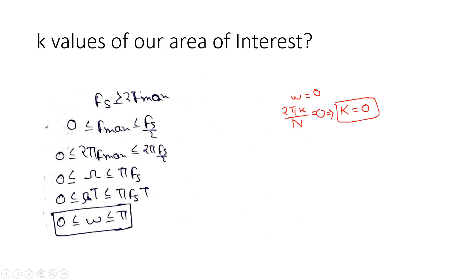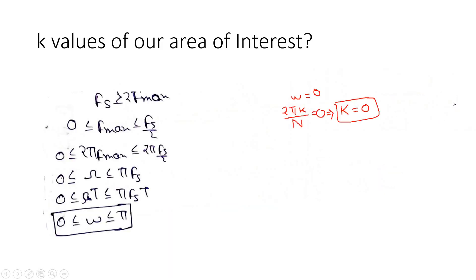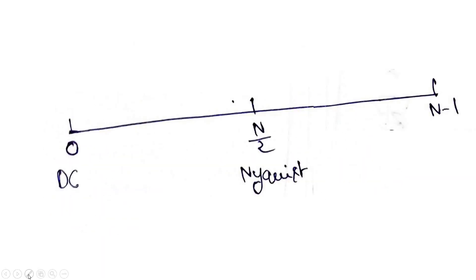So what we are getting is: from 0 to N/2, frequency increases (N/2 corresponds to π); from N/2 to N-1, frequency decreases, because N-1 corresponds to 2π/N × (N-1) which is close to DC. So in the overall DFT spectrum we have low frequency, then high frequency at N/2, and then low frequency again as k approaches N-1.